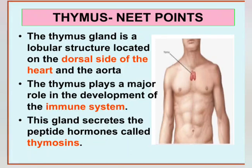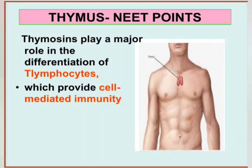The thymus gland secretes a peptide hormone called thymosin. The hormone thymosin plays a major role in the differentiation of T-lymphocytes, commonly called T-cells. There are two types of lymphocytes in our body: B-lymphocyte and T-lymphocyte. B-lymphocytes differentiate in bone marrow, but T-lymphocytes differentiate in the thymus — the first letter 'T' indicates thymus. Hence, thymosin plays a major role in the differentiation of T-lymphocytes.